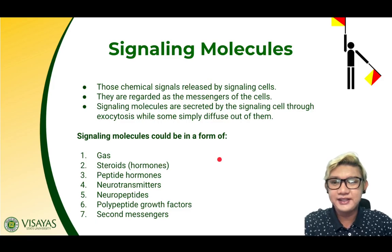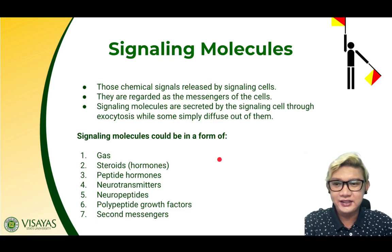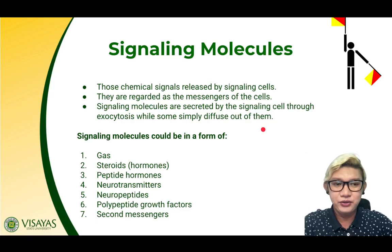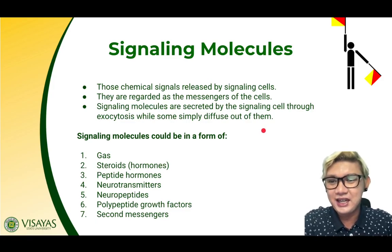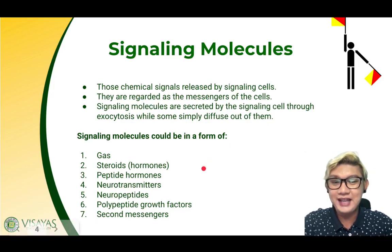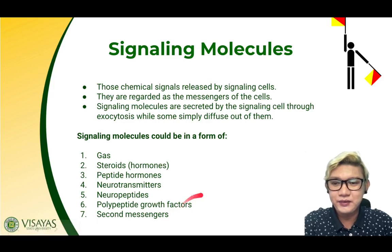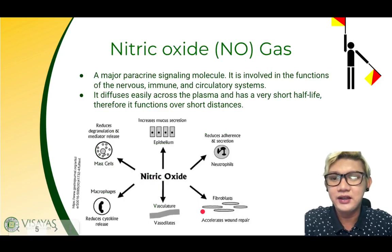Signaling molecules are those chemical signals that are released by signaling cells. They are regarded as the messengers of the cells. Signaling molecules are secreted by the signaling cell through exocytosis, while some simply diffuse out of the cell. Signaling molecules can be in the form of a gas, steroids that act as hormones, peptide hormones, neurotransmitters, neuropeptides, polypeptide growth factors, and second messengers.